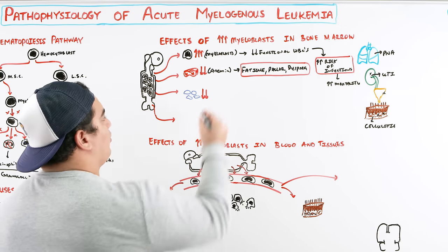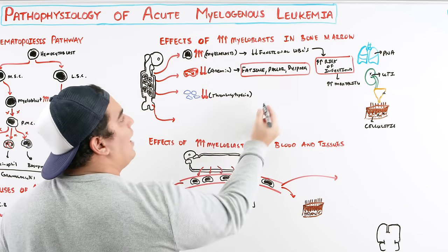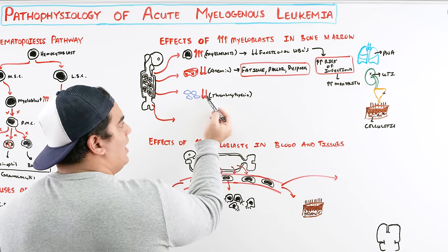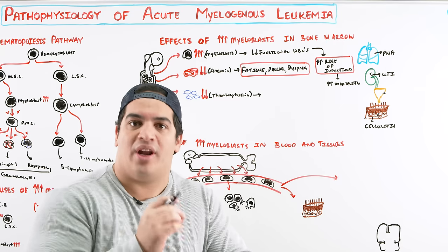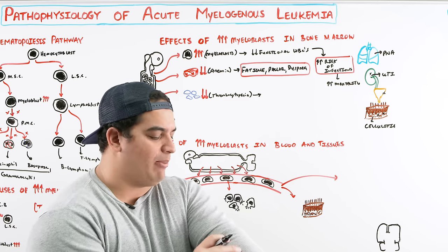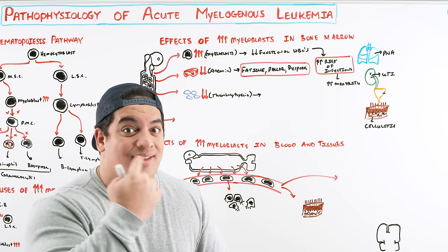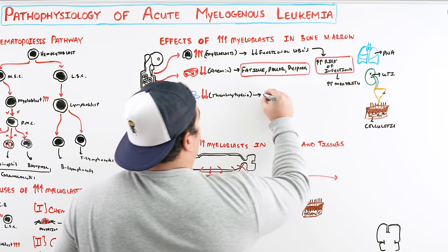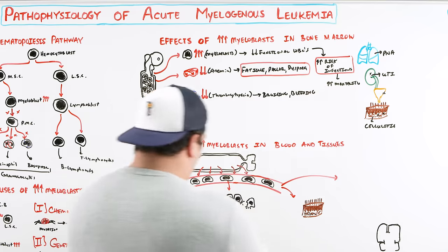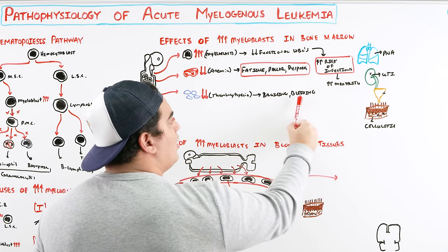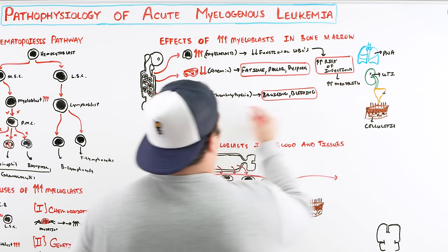When you have low platelets, this is called thrombocytopenia. There aren't enough platelets because the myeloblasts are crowding out the bone marrow, leaving no nutrients or space for platelet production. With low platelets, you have a risk of bruising and bleeding because you can't initiate clotting mechanisms. Watch for petechiae, purpura, ecchymosis, or full-on bleeding — epistaxis, gingival bleeding, or GI bleeding. You need a CBC to confirm thrombocytopenia.